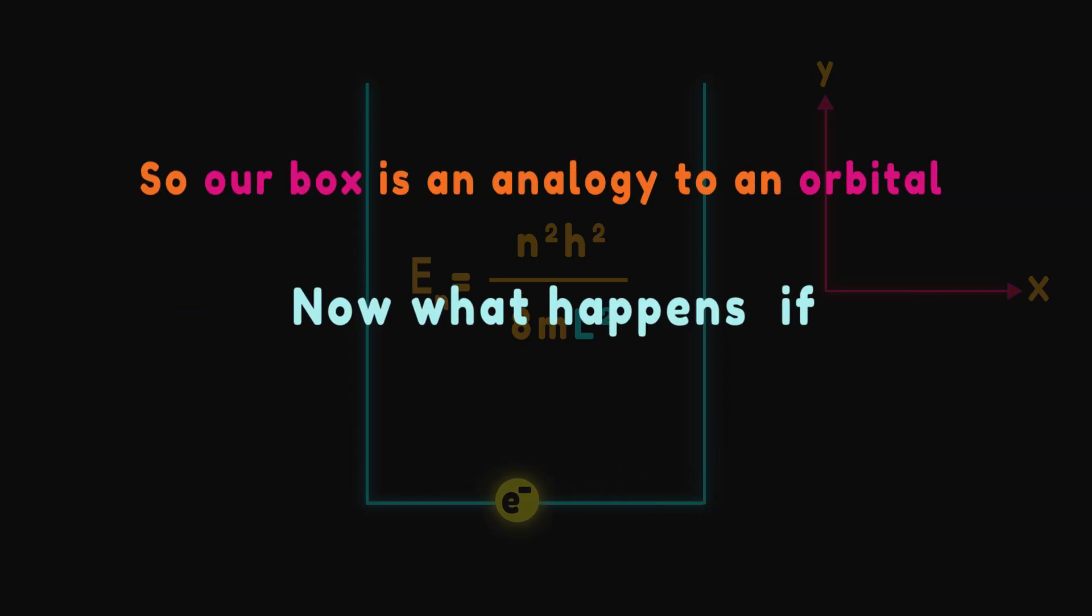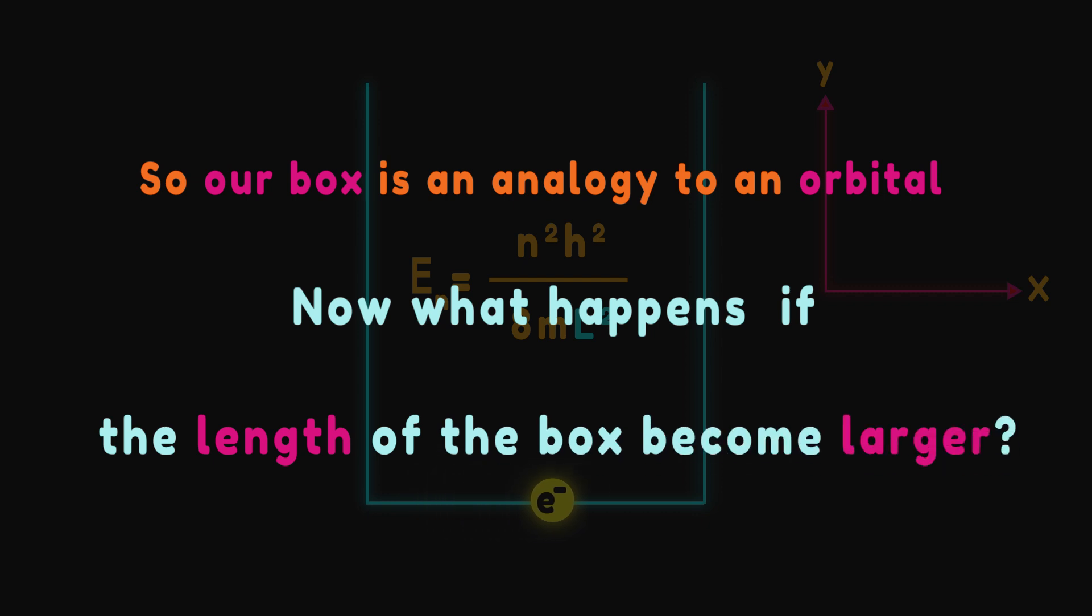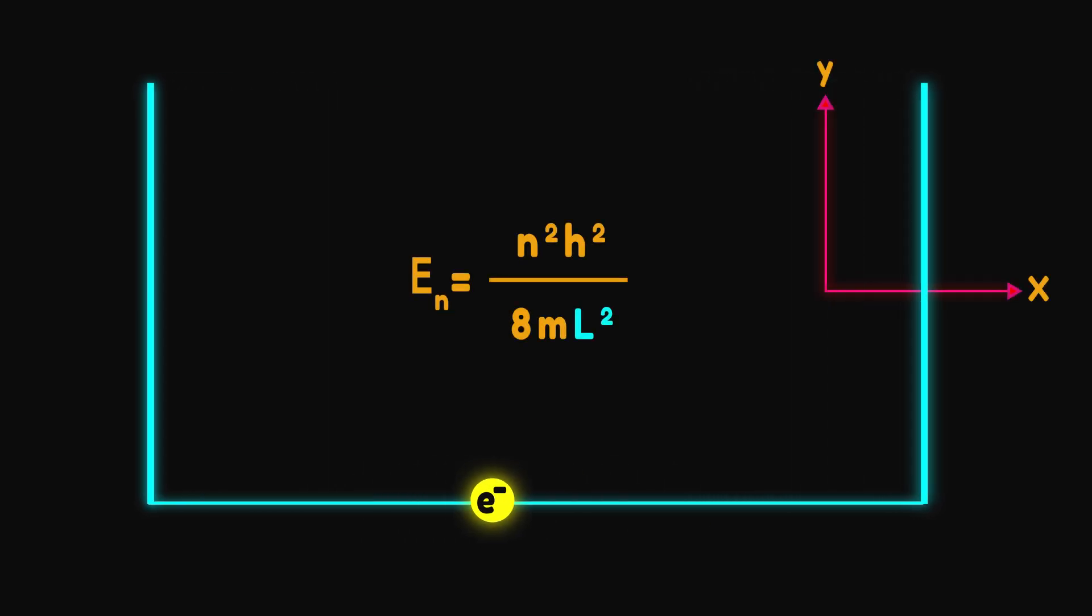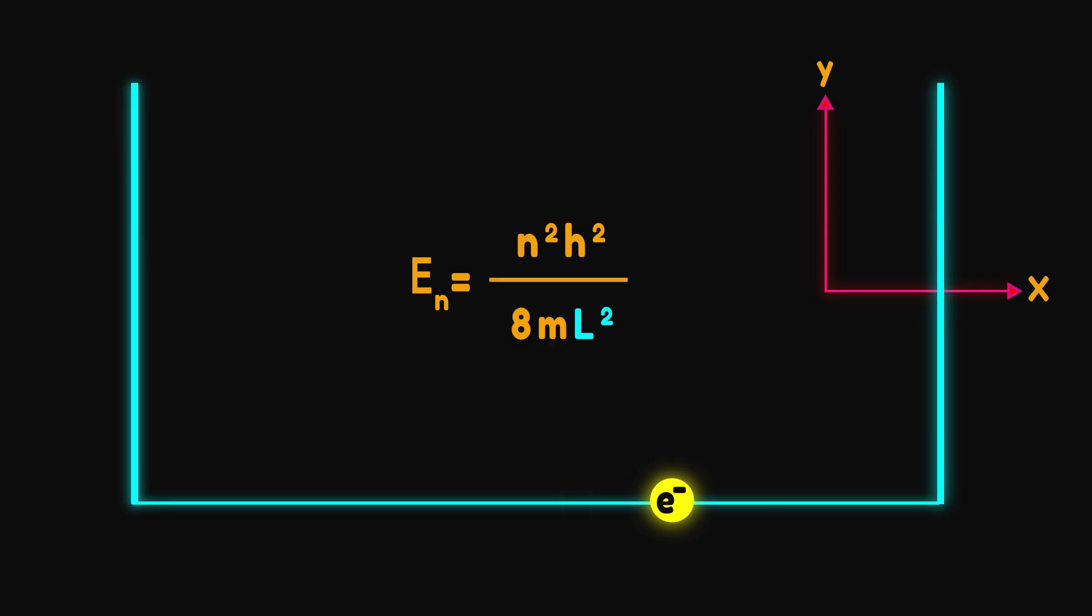Now what happens if the length of the box becomes larger? Here's the bottom line: Taking into account the relation between the energy of the electron and length of the box, if the electron occupies a larger amount of space, its energy decreases.